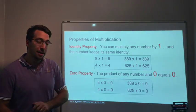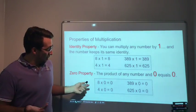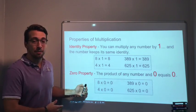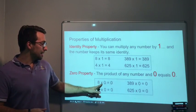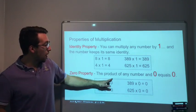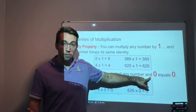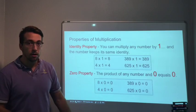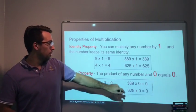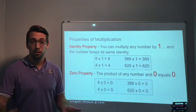And then the 0 property. It's kind of the exact opposite. You're not going to get the same number, you're going to get 0. 8 × 0 is 0. So the product of any number and 0 equals 0. 4 × 0 is 0. 389 × 0 is 0.